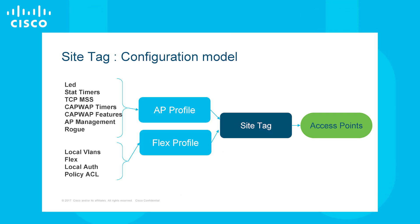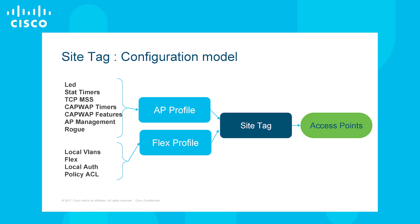One of them is site tag. Site tag defines the properties of the site which contains two profiles: flex profile and AP profile. The attributes that are specific to flex are remote site, part of the flex profile. Apart from the flex profile, the site tag also constitutes some attributes which are specific to the physical sites.